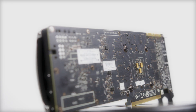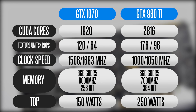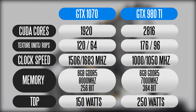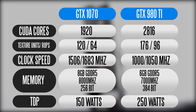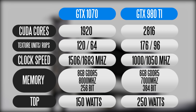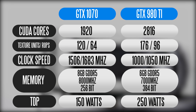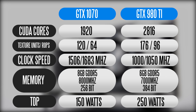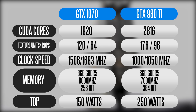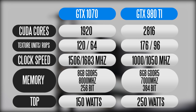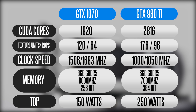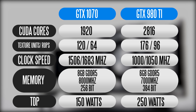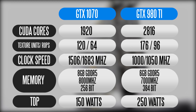Looking at the overall specifications, the 980 Ti has over 2800 CUDA cores versus 1920 cores on the 1070. In terms of texture units and render output units, the 980 Ti definitely has the 1070 beat. The 1070 does have higher core clock and boost clock frequencies. On memory, the 980 Ti has a higher bandwidth 384-bit memory bus versus the 1070's 256-bit bus, although the 1070 has a higher memory clock speed. The 1070 also has more VRAM at 8GB of GDDR5 versus 6GB on the 980 Ti.